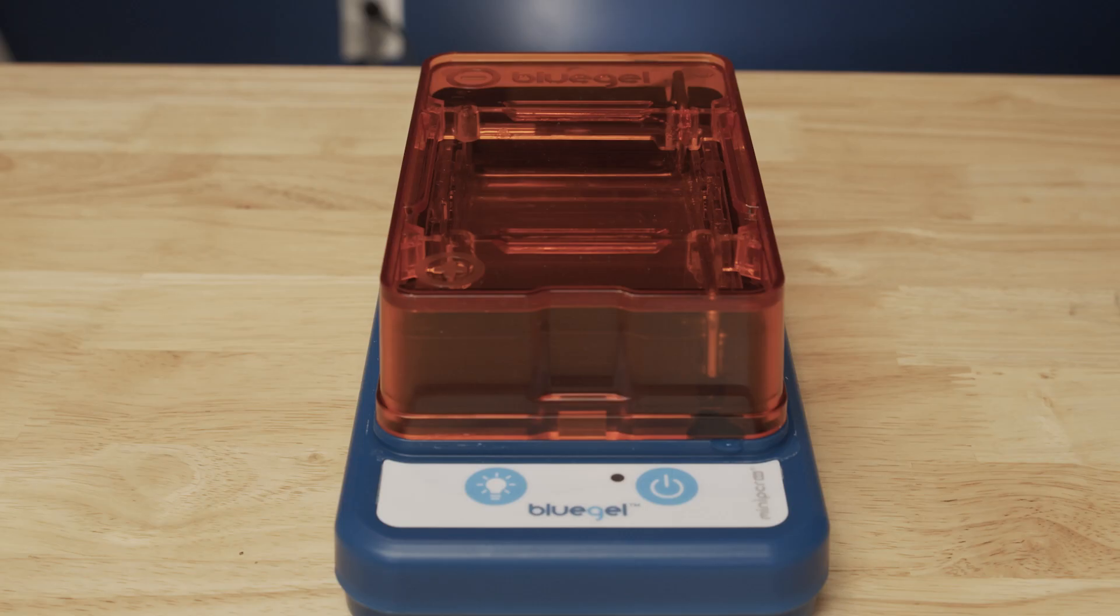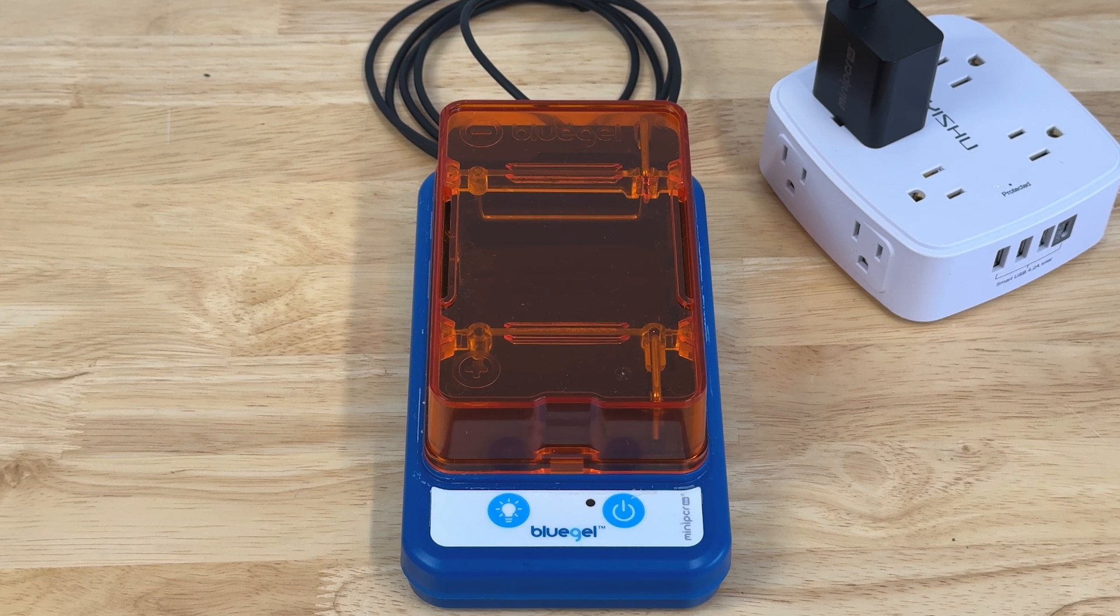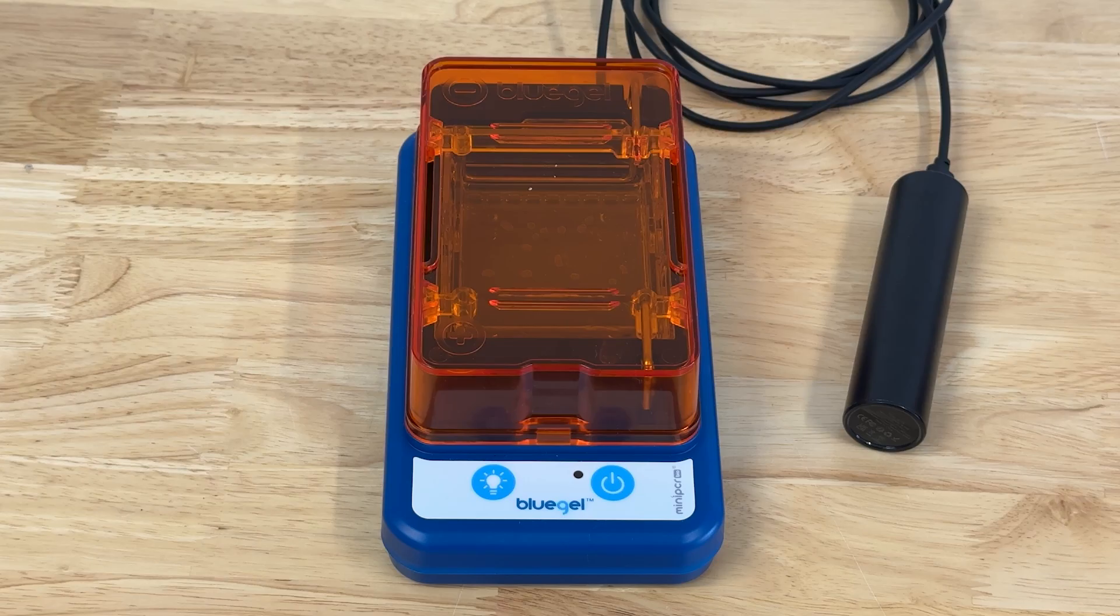You can begin to visualize the DNA samples as soon as the Blue Gel begins to run by turning the blue light in the base on with the small light bulb button. You can turn the lights in your room off to make visualization easier.